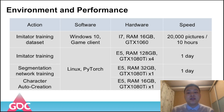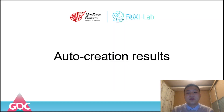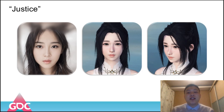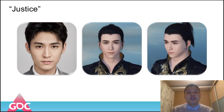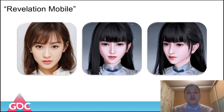This table shows the performance of our method, which has a short development period and high execution efficiency in running time. Here we show some results. Our method has been verified on the game Justice and can generate vivid characters based on a single photo. It is not limited to different classes and different genders. Our method can also be applied to mobile games, and here are some results on an upcoming game.